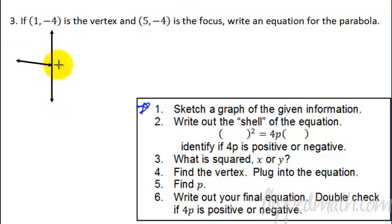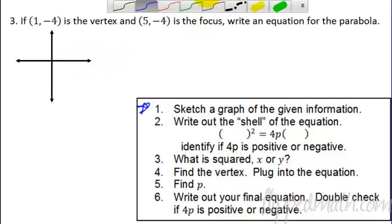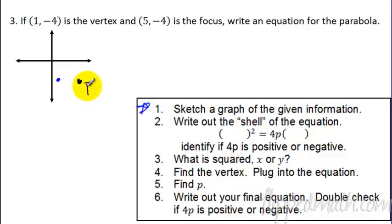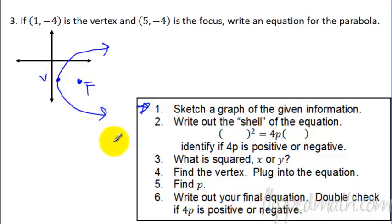Create yourself a quick little coordinate plane. Put down the vertex at 1, negative 4 - put a dot there. Then where's the focus? 5, negative 4 - go over there. So if the focus is at 5, negative 4 and this one here is the vertex at 1, negative 4, that means it must be opening to the right. That's what I mean by sketch a quick little graph of the given information.